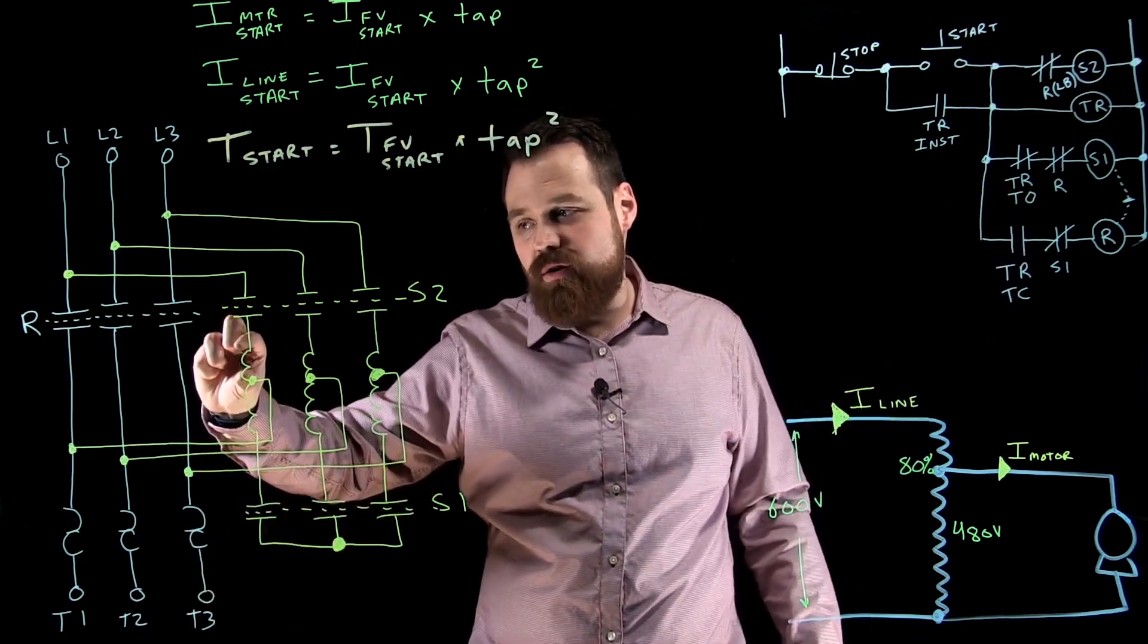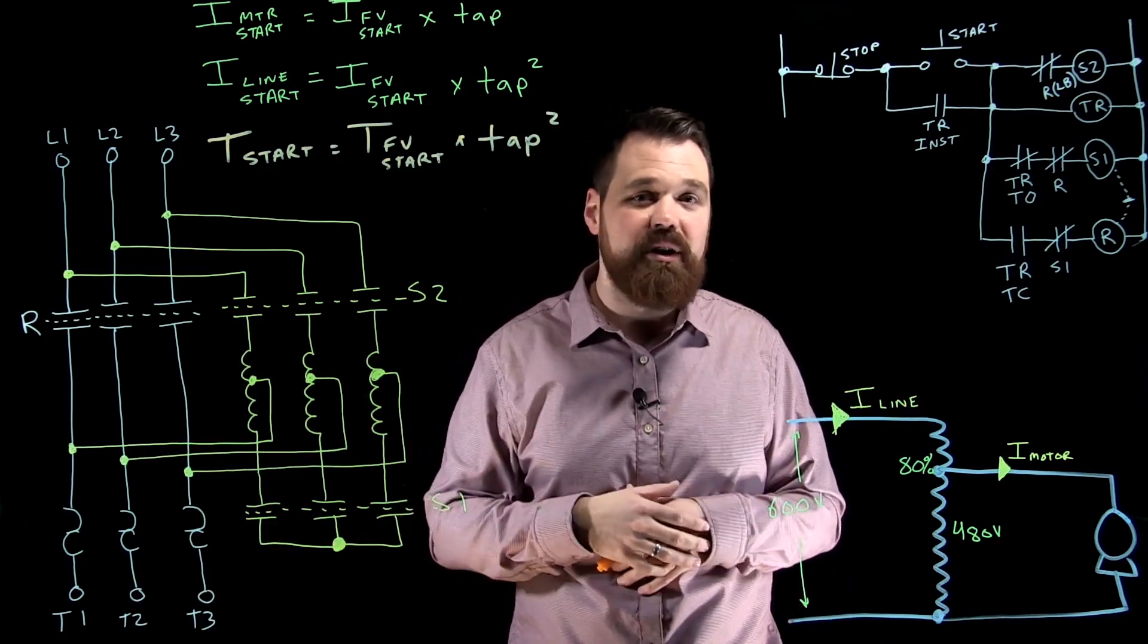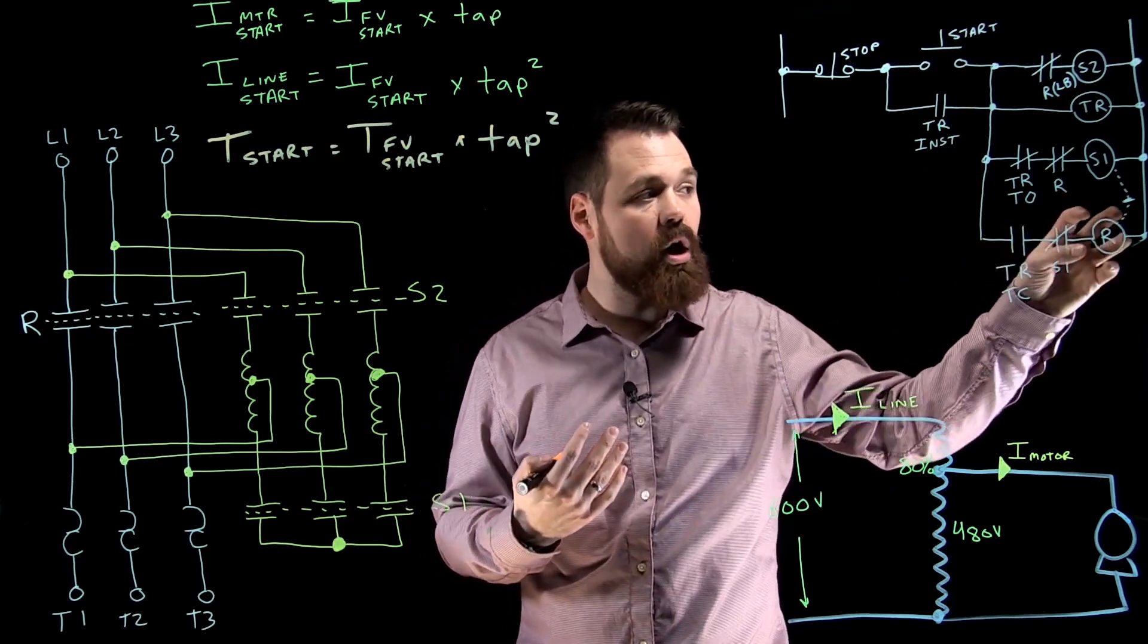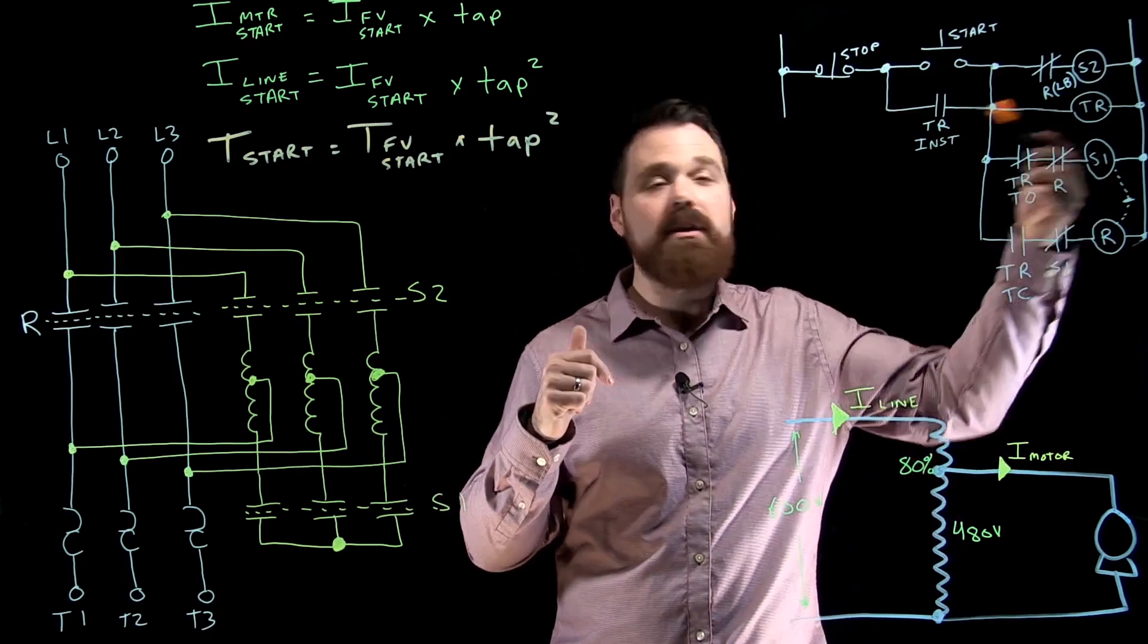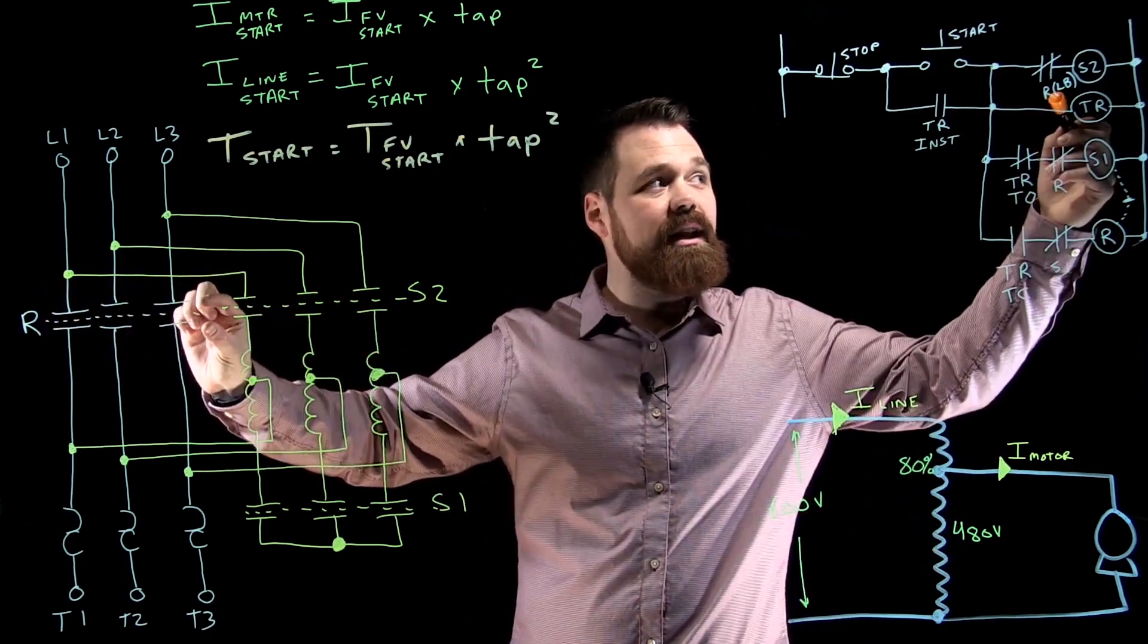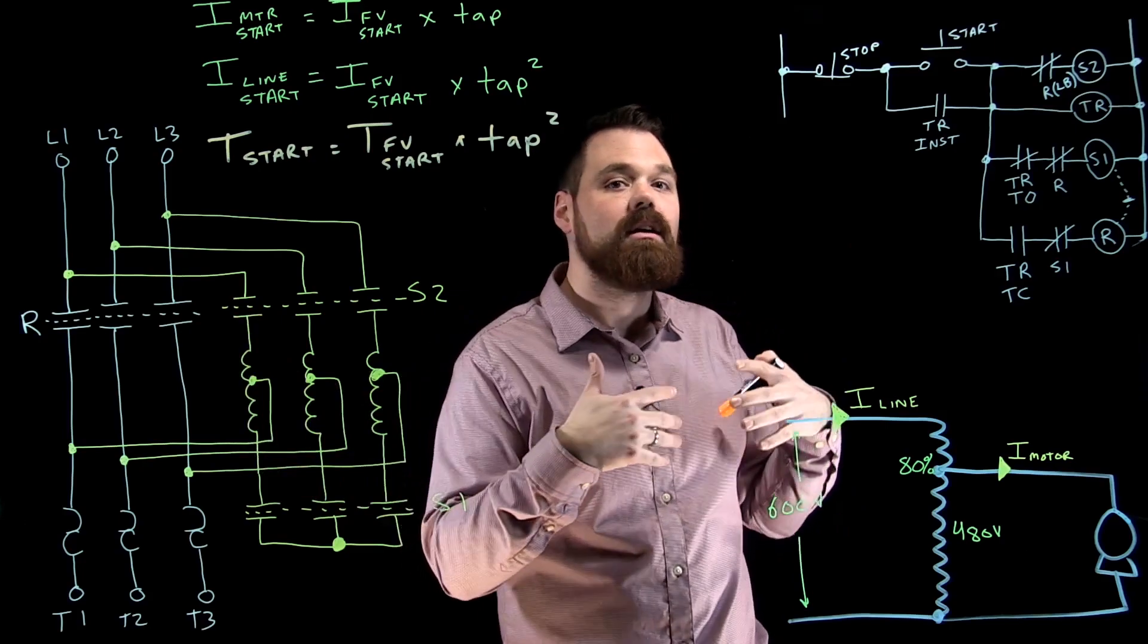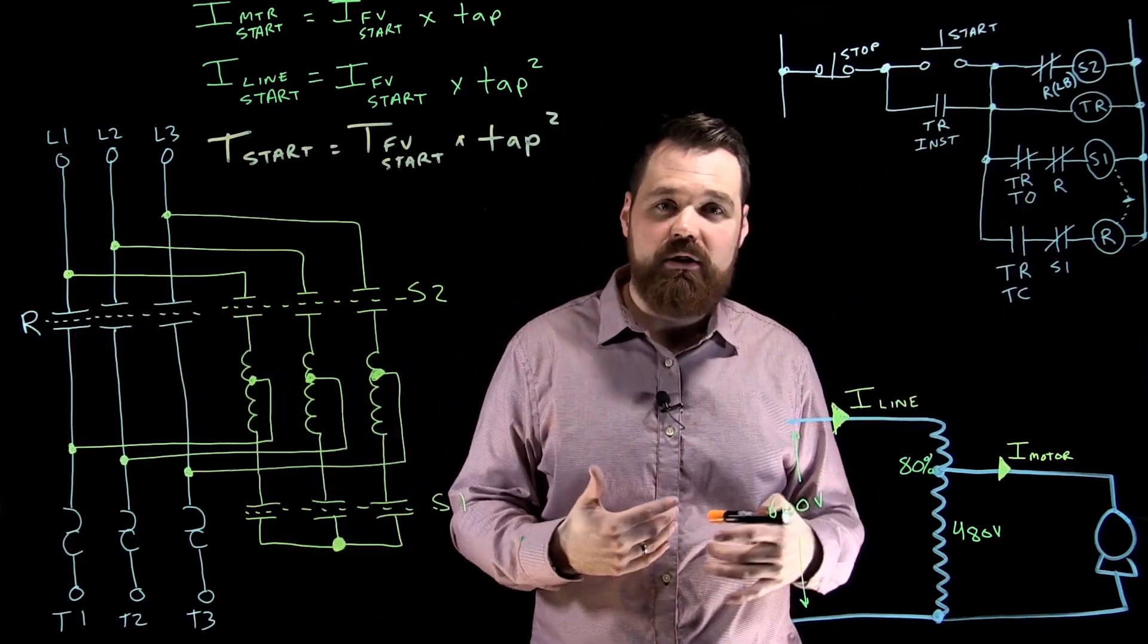However, you are running current through this series portion of that autotransformer winding, which can create a little heat. Then my timing contact closes, my R coil energizes. These will typically all close first, and they'll use a late break type of contact. That contact will actually wait a second before it opens, so it's a make before break style, which keeps that closed transition.